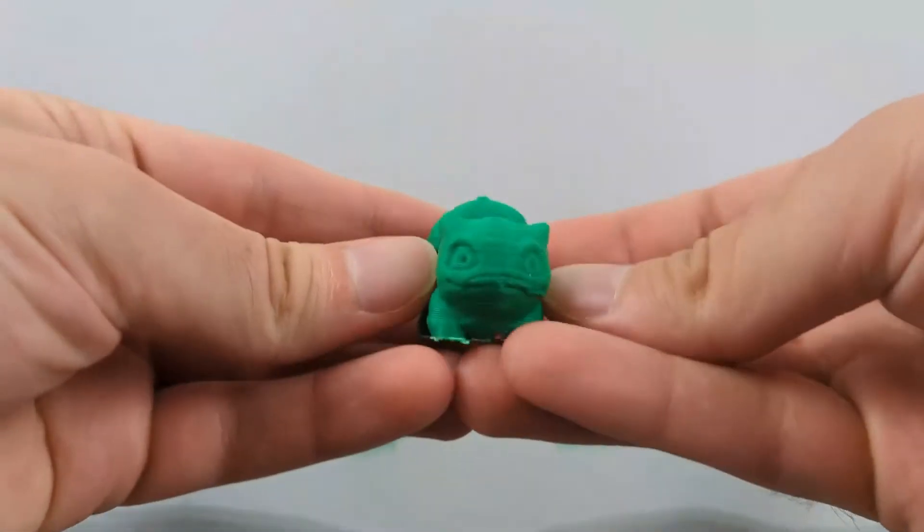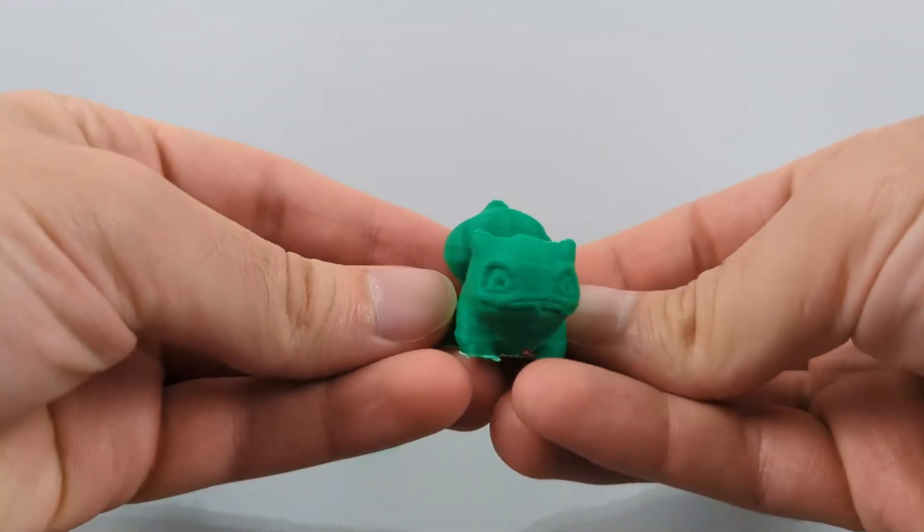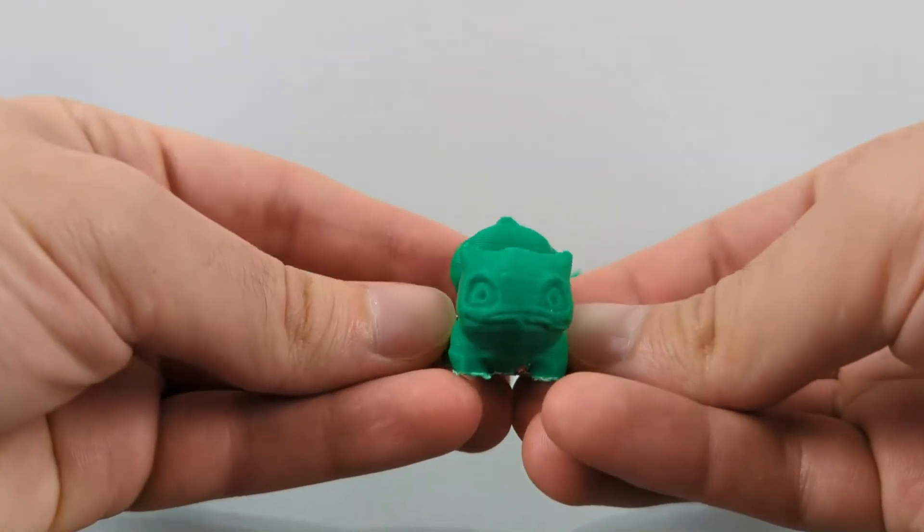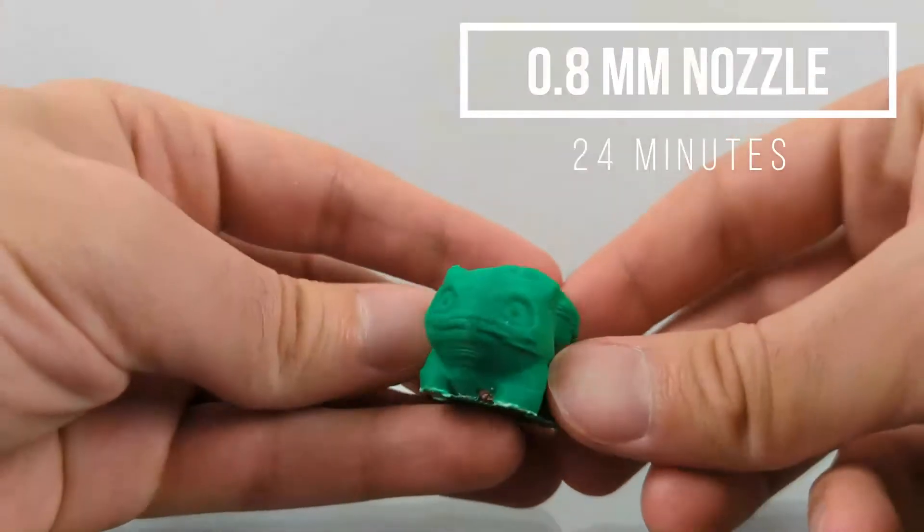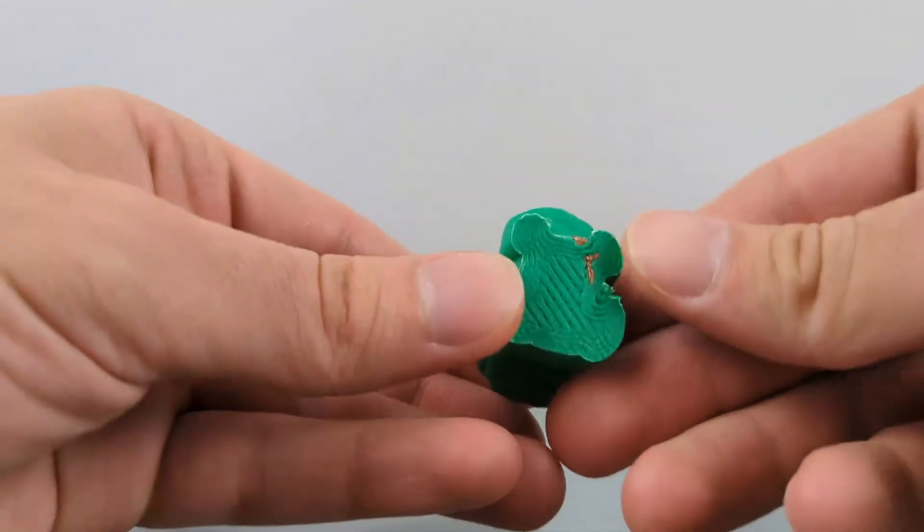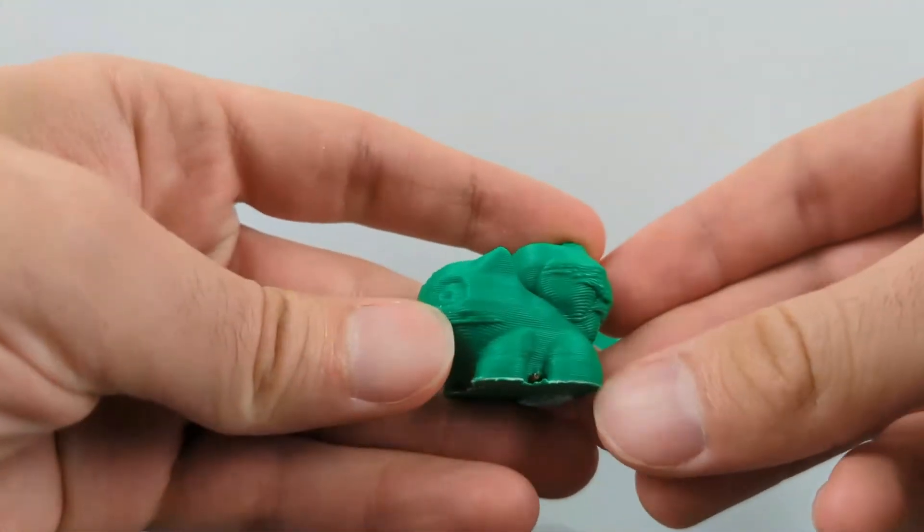So this is the 0.8 millimeter. Now it is 24 minutes of print, so very fast. Ignore the bottom - for some reason I accidentally printed a brim instead of a skirt, I don't know why.